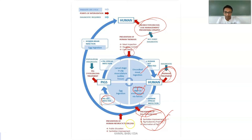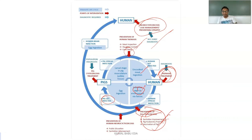Prevention of human neurocysticercosis requires proper public health education and sanitation improvement. Once a human enters the neurocysticercosis stage, early diagnosis and treatment are essential. These are the main intervention points in the Taenia solium life cycle, and diagnostic procedures will be discussed further in coming points.